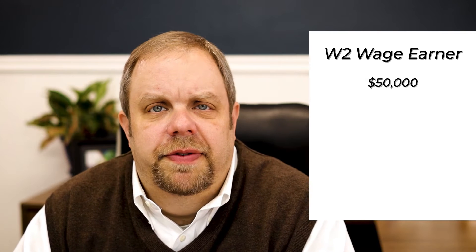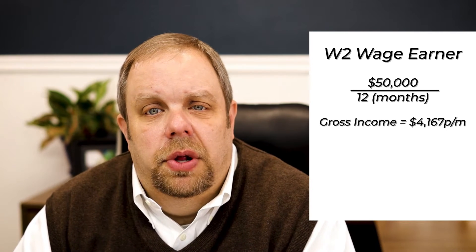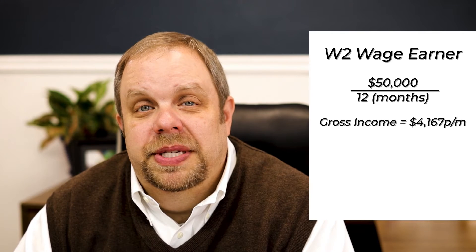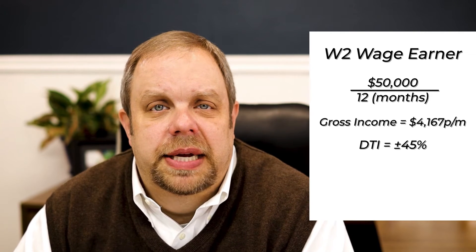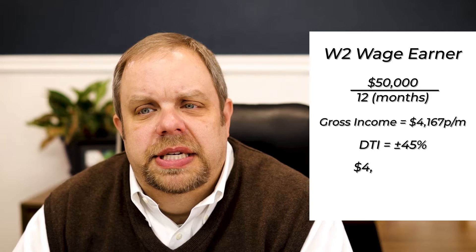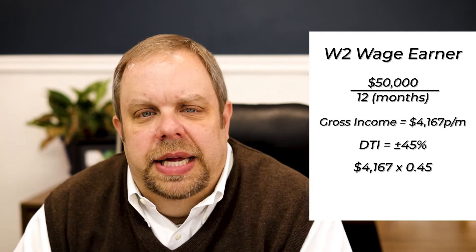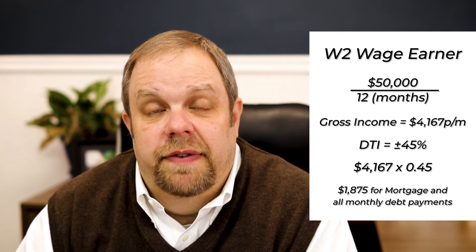Let's say that you're a W-2 wage earner making $50,000 a year. That's averaging roughly $4,167 a month. If we're going conventional, we're going to be stuck to roughly a 45% debt-to-income ratio. We're going to take $4,167 times 0.45, which gives us roughly $1,875.